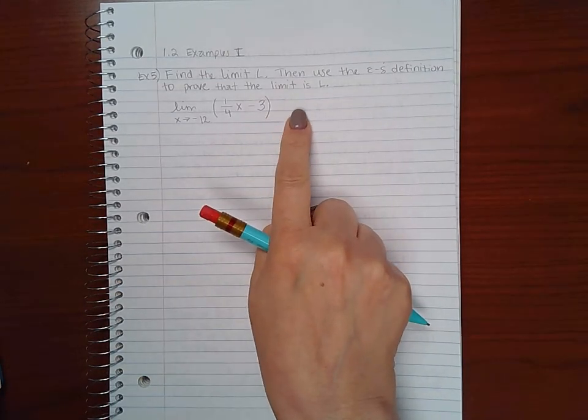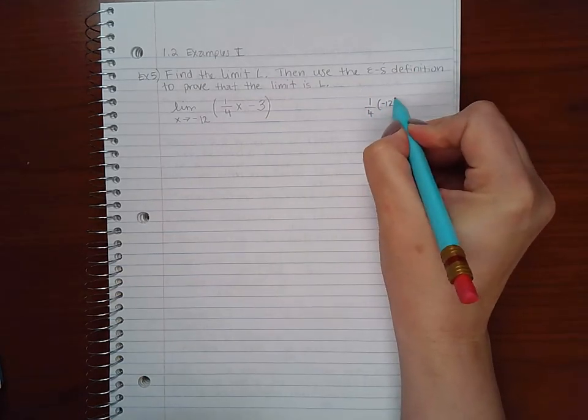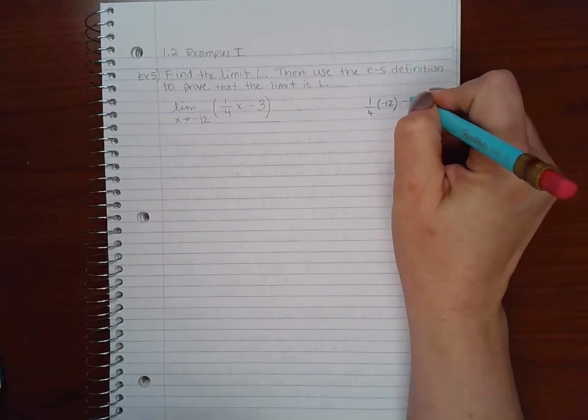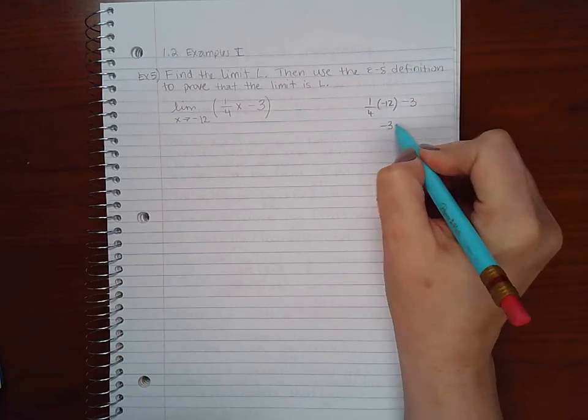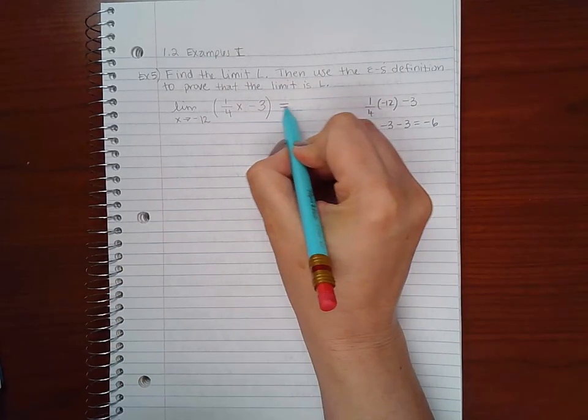I don't have L, I have to find that. I can find it by direct substitution, so let's plug in negative 12 for x and we'll get negative 3 minus 3, which is negative 6. So now I know that my L is negative 6. This over here is kind of just like my scratch work.